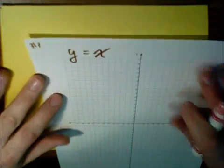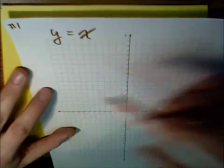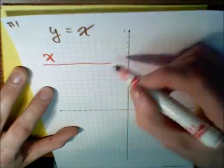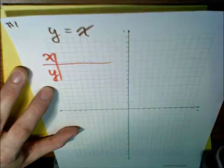The next graph is y equals x. And here, it may be helpful to make a table of values. If I put in a value of x, that will get out a value of y.